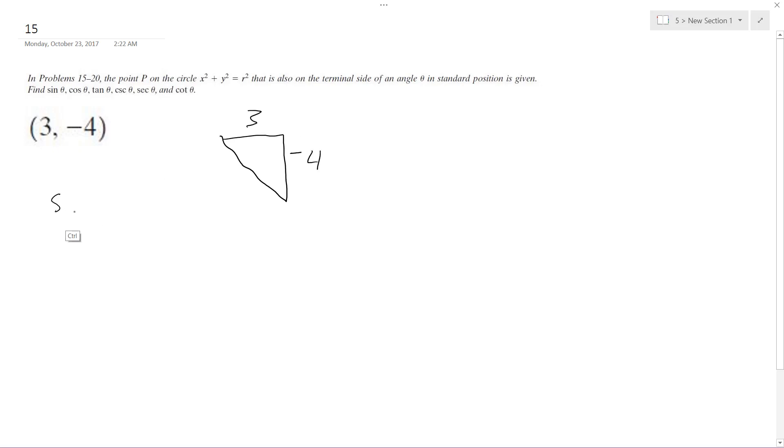R is going to be the Pythagorean theorem, so 3 squared plus negative 4 squared gives us 25. Square root of 25 is equal to 5. We just need the positive. R is always regarded as an absolute magnitude, which is 5.